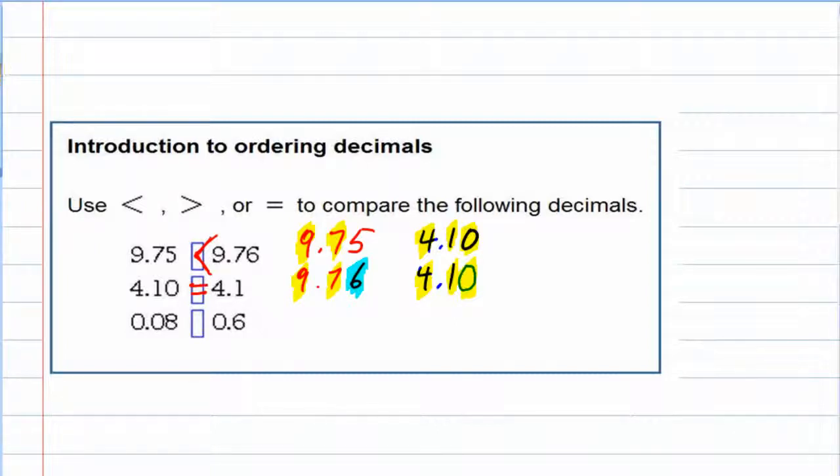The last one here, we line those up, 0.08, 0.6, and although they start off with the first place value being the ones and a tie, the tie is quickly broken at the next place value.